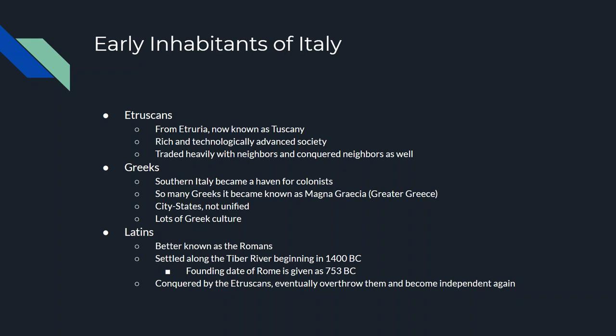Now the Latins — we know them better as the Romans. Latins and Romans are the same thing, but not quite: Romans were Latin people who lived in the city of Rome, and eventually Rome became the dominant city, so the Latins became known as the Romans. They settled along a river called the Tiber. The site we know as Rome had people there as early as 1400 BC, but the founding date of Rome is given as 753 BC, because that's the first time people stayed there permanently. The Latins were conquered by the Etruscans, learned everything they could from them, and about 150 years later overthrew the Etruscans.